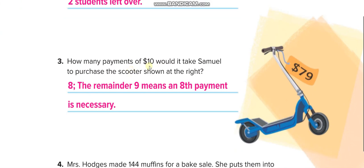Here. How many payments of $10 bills would it take Samuel to purchase the scooter shown at night? He wants to use the $10 bills for the 79. So he has to give 8 $10 bills. And the shopkeeper will return him $1. When you divide 79 with 10, you will get 7 remainder 9. So the remaining $9 he will pay with the last $8 and the shopkeeper will return him $1. So the remainder 9 means an 8th payment is necessary.